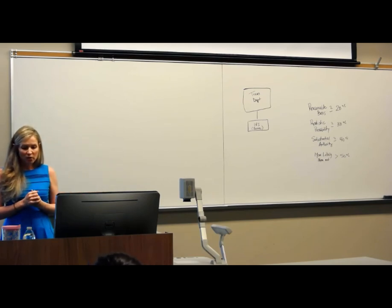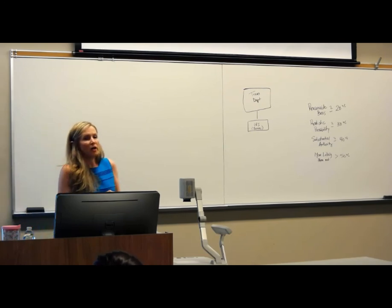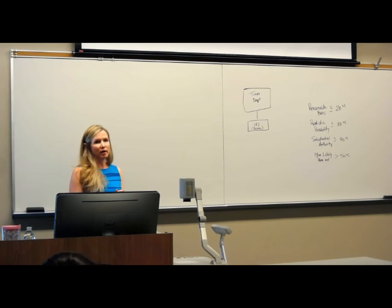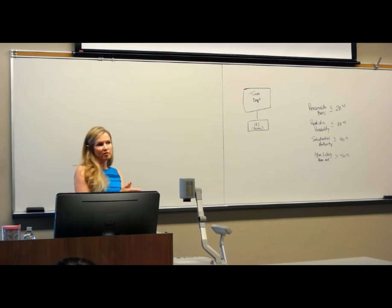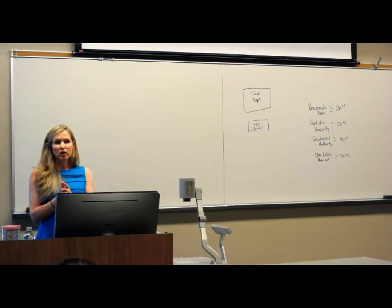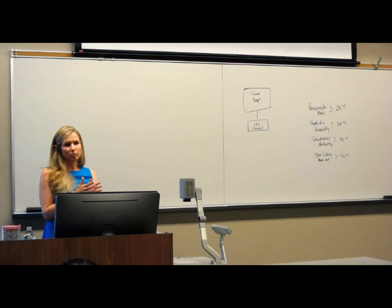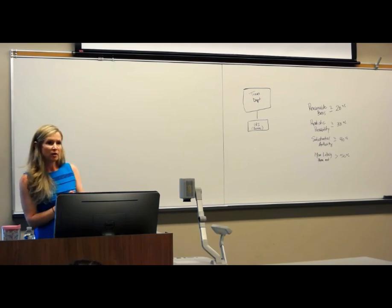Your primary sources of authority come from all three branches of our government. Some comes from the legislative branch, some from the executive branch, and some from the judicial branch. We started off last week by talking about the sources of primary authority that come from the legislative branch.